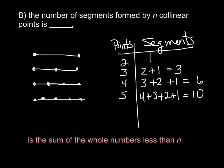Is the sum of the whole numbers less than n? So if you looked, if I had five, I added all the numbers less than that. All the whole numbers less than that. If I had four, I added all the whole numbers less than that. If you had 18, you would add 17 plus 16 plus 15 and so on.